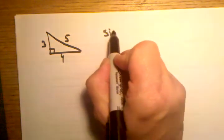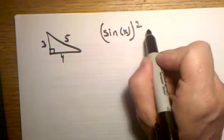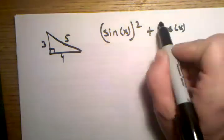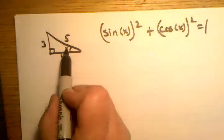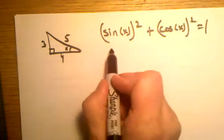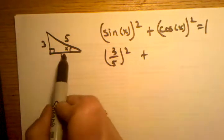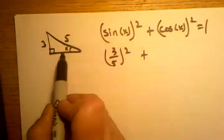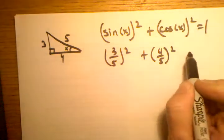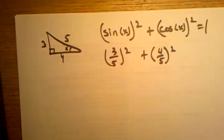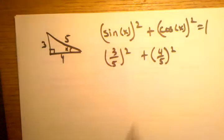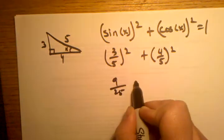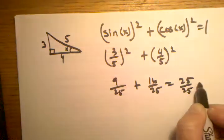I'm going to show you that if I choose the other angle in the same three-four-five right triangle and follow the same process, I'll end up with the same result. The sine of this angle is now opposite over hypotenuse, which is three-fifths squared, plus the cosine of this angle, which is four-fifths squared. The numbers are just switched in order — three-fifths squared plus four-fifths squared gives nine twenty-fifths plus sixteen twenty-fifths, which is twenty-five twenty-fifths, still equal to one.